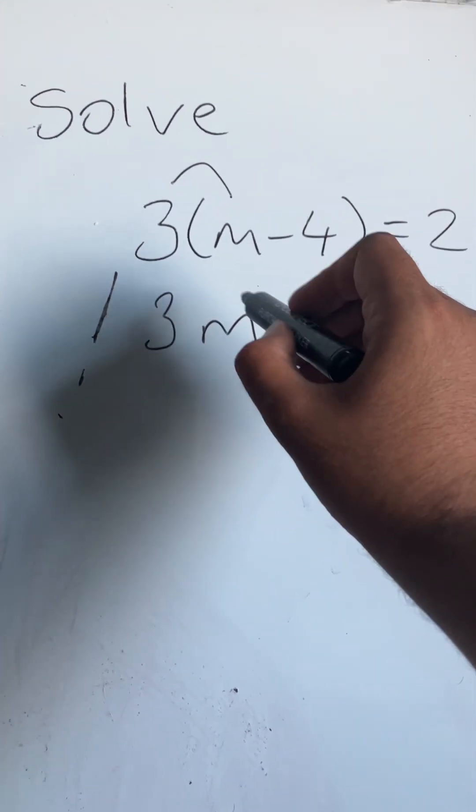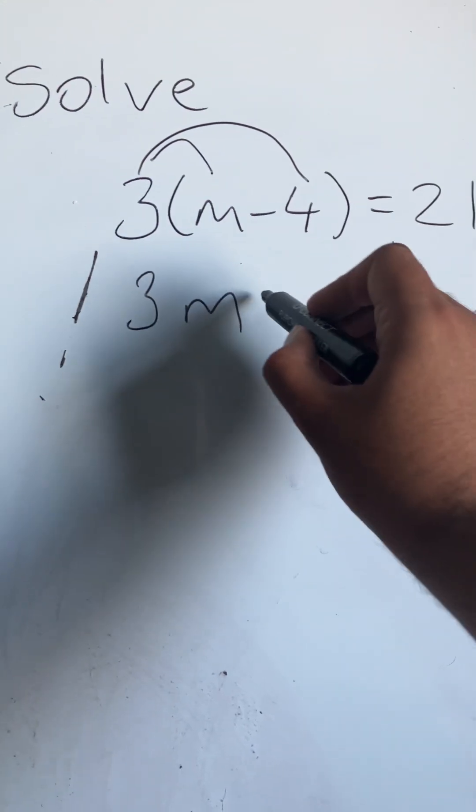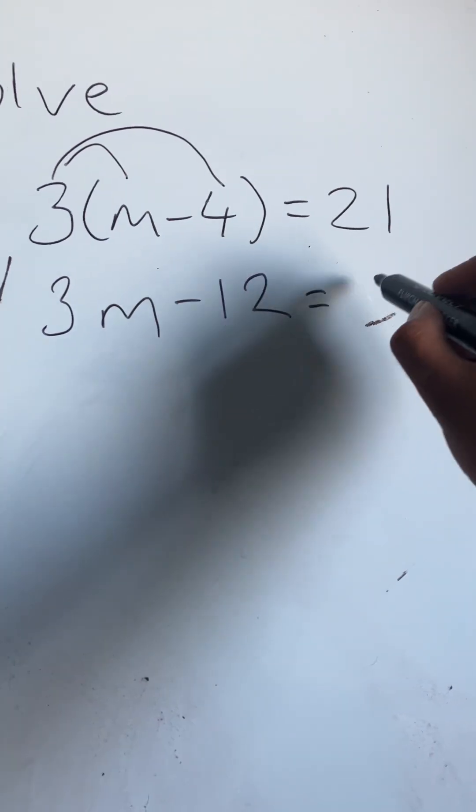3 times m is going to be 3m. 3 times minus 4 is going to be minus 12. That's going to equal 21.